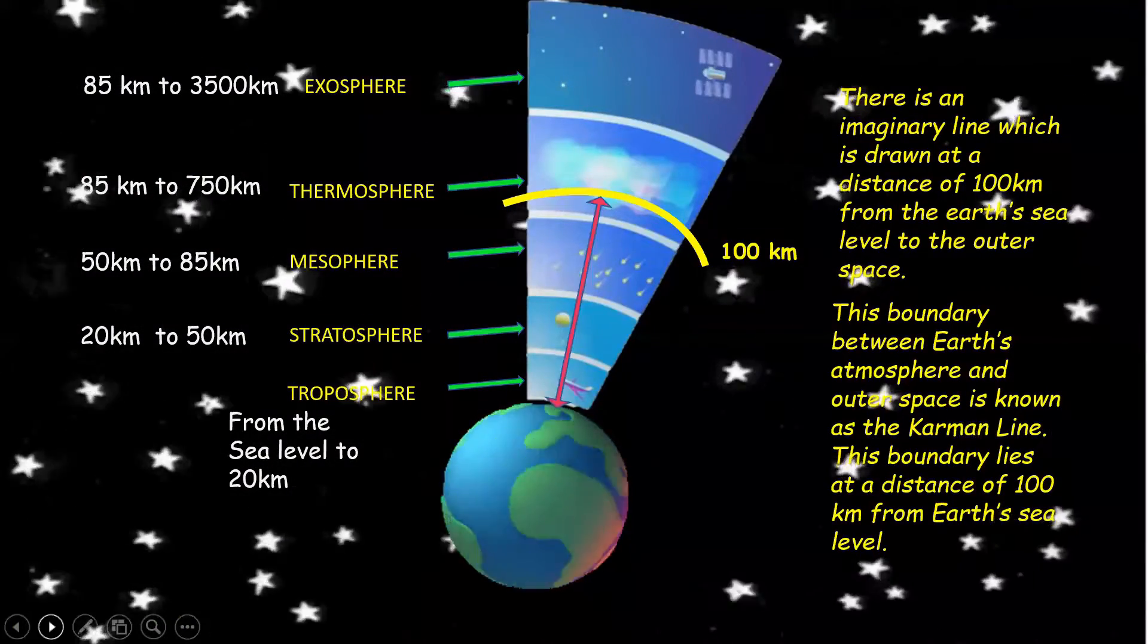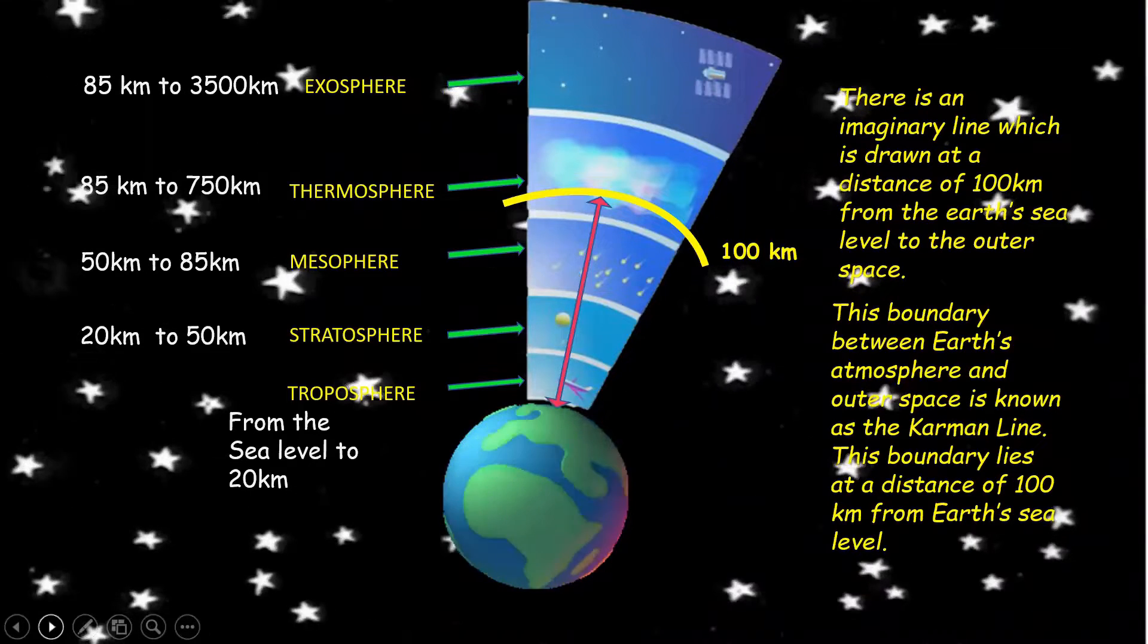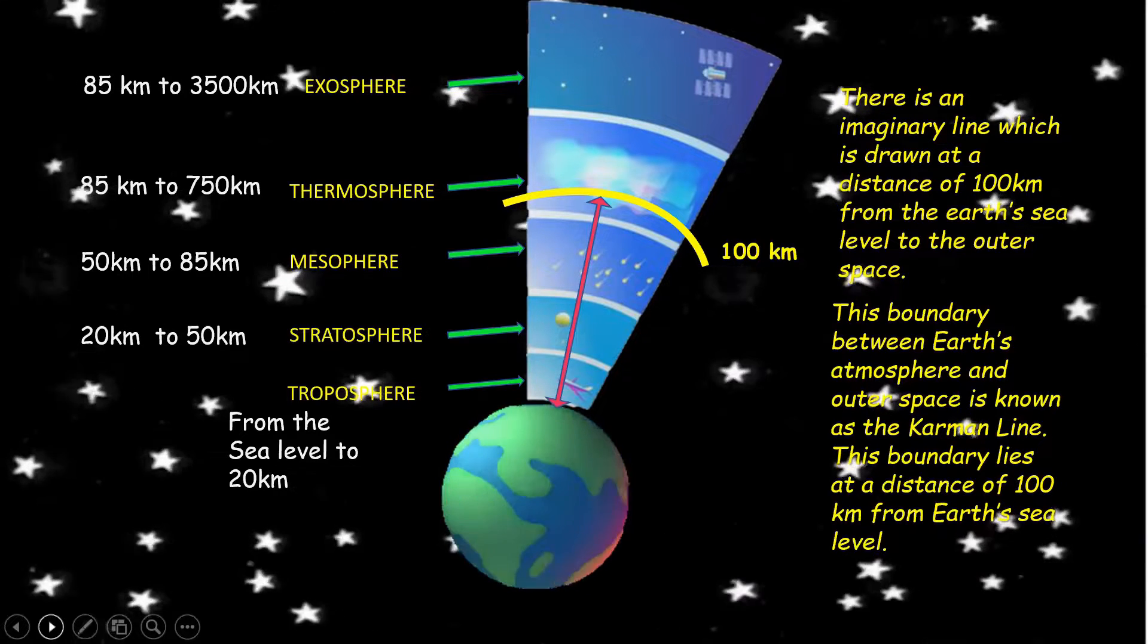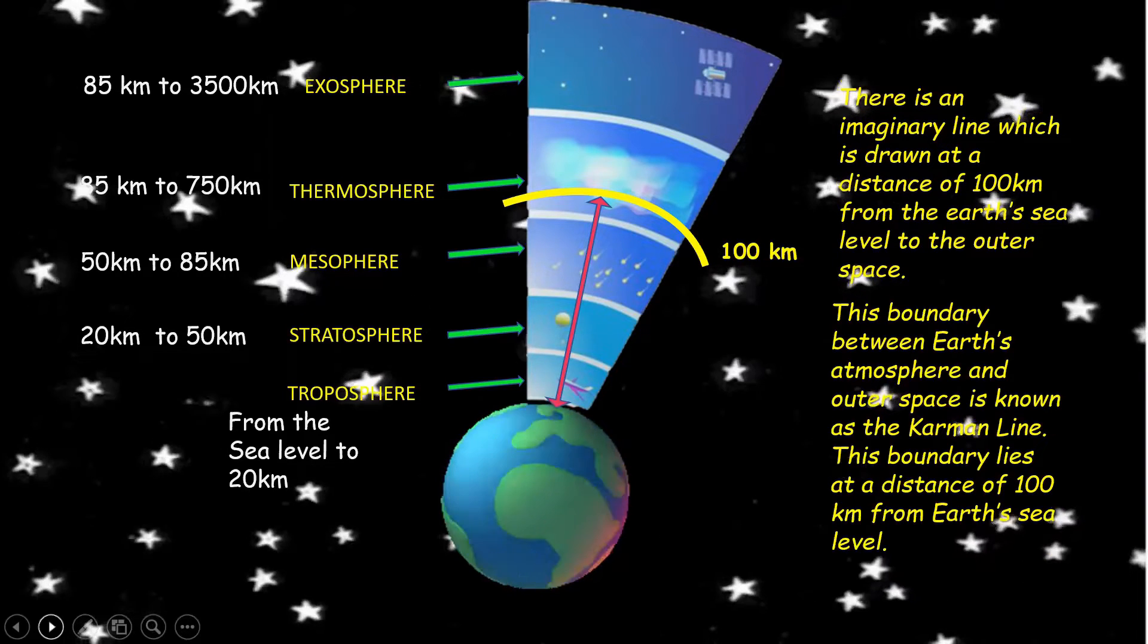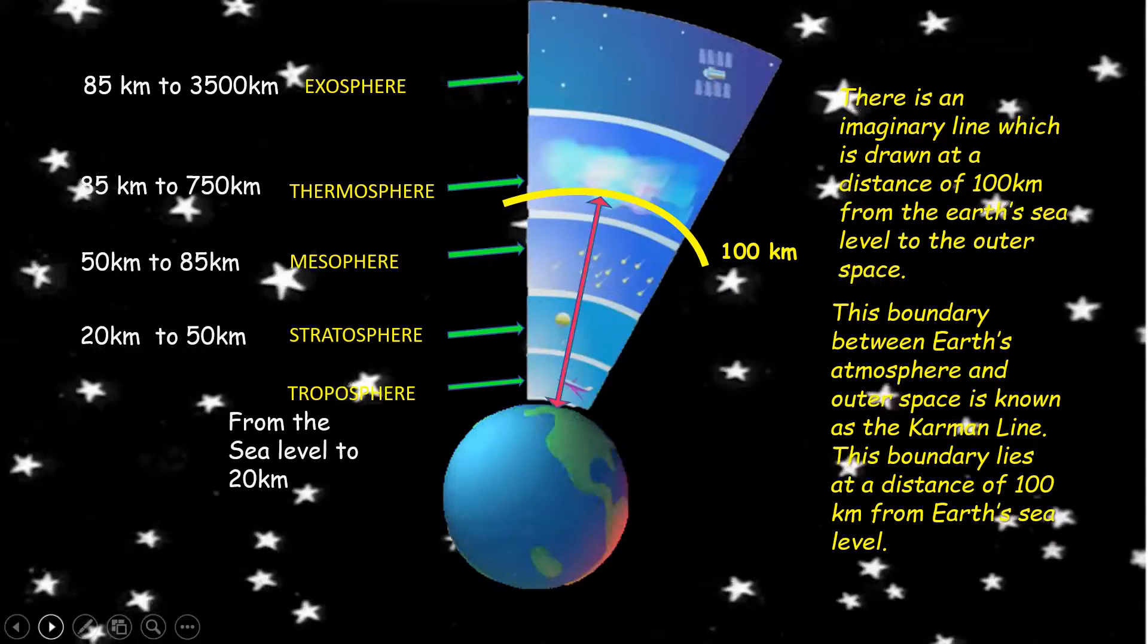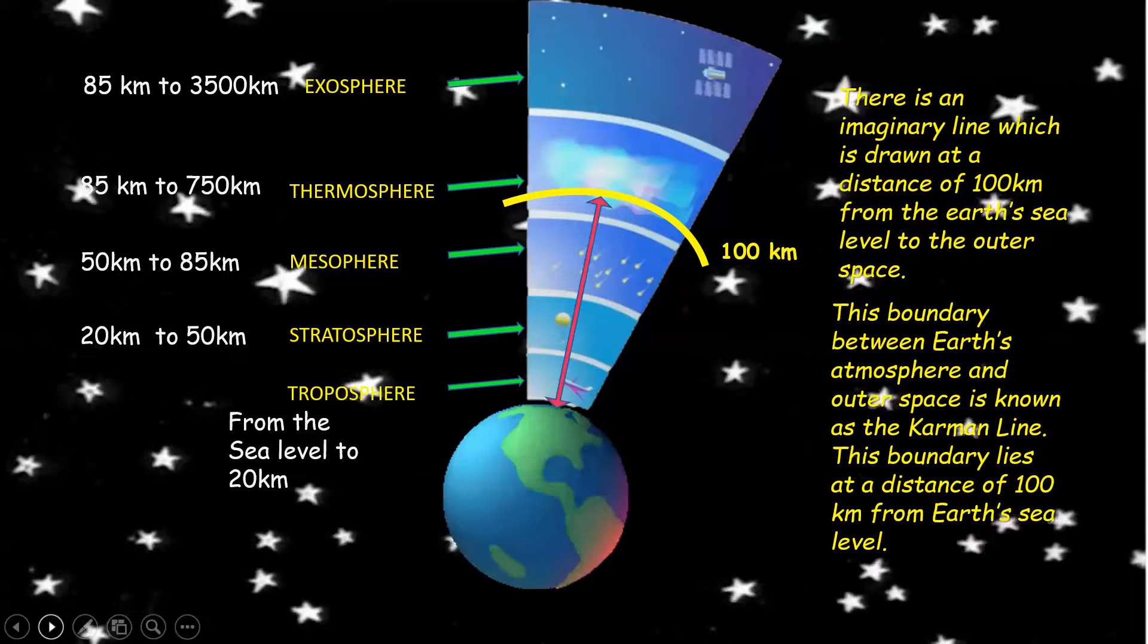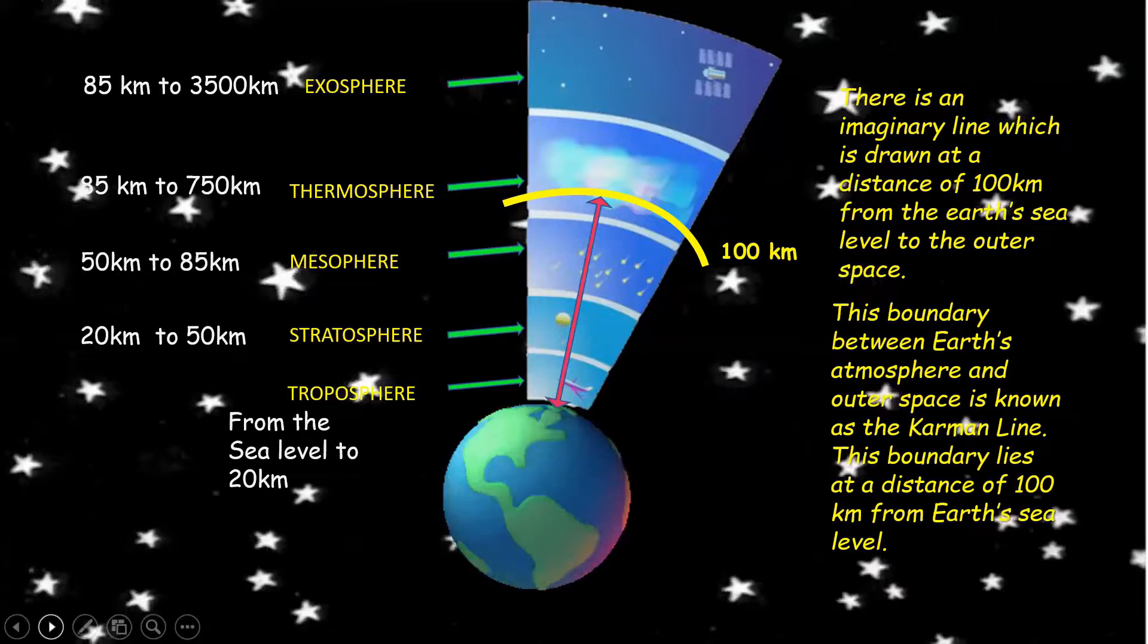There is an imaginary line which is drawn at a distance of 100 kilometers from the earth's sea level to the outer space. This boundary between the earth's atmosphere and the outer space is known as the Karman line. This boundary lies at a distance of 100 kilometers from the earth's sea level.